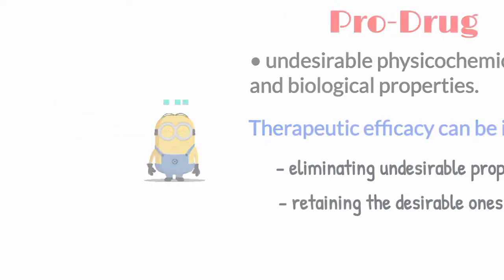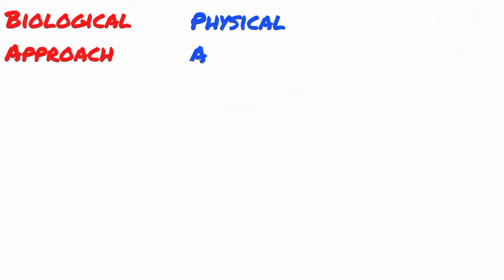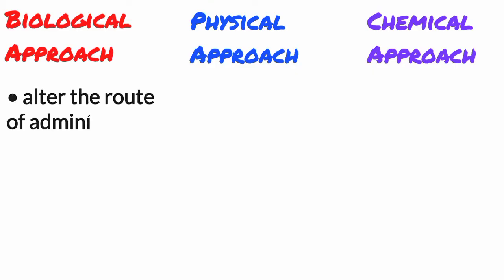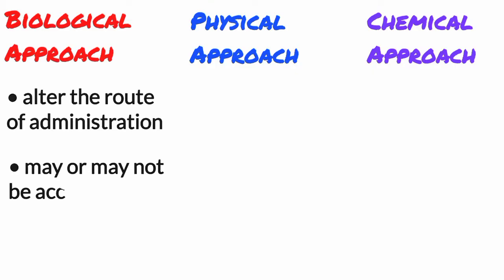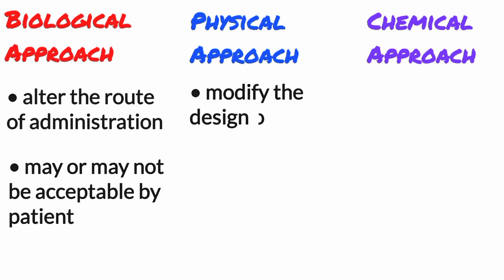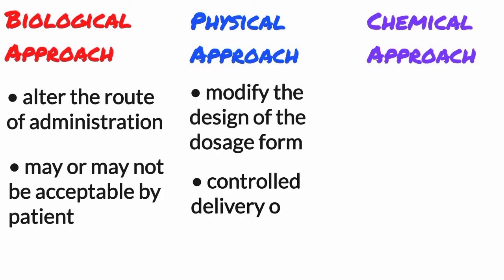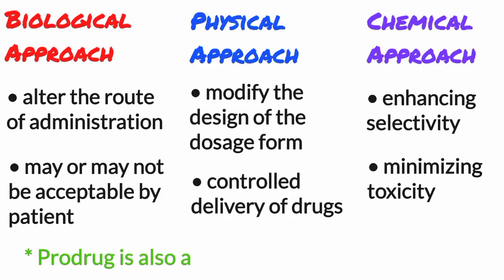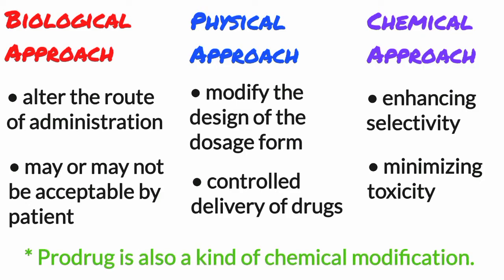This can be achieved through biological, physical or chemical means. The biological approach is to alter the route of administration, which may or may not be acceptable to the patient. The physical approach is to modify the design of the dosage form, such as controlled delivery of drugs. The third and best approach in enhancing drug selectivity while minimizing toxicity is the chemical approach. Pro-drug is also a kind of chemical modification, so let's discuss it in detail.